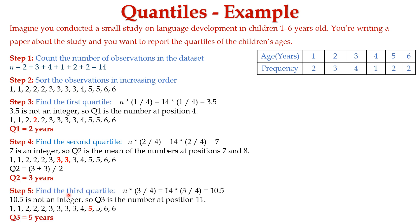In step 5, we need to find the third quartile value. The formula is n multiplied by 3 divided by 4, which equals 14 times 3 divided by 4, which is 10.5. Since 10.5 is not an integer value, Q3 is the number at position 11, rounding 10.5 up to 11. At the 11th position, we have the value 5, so Q3 is equal to 5.